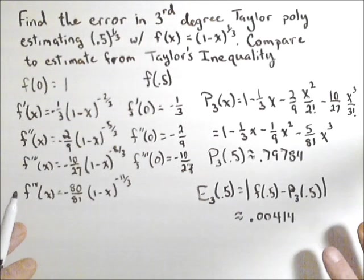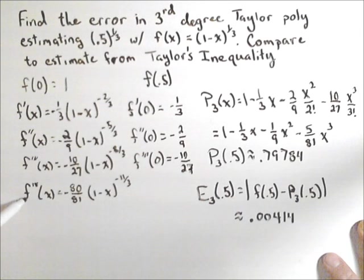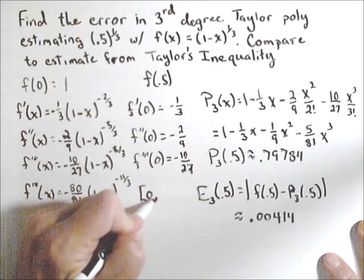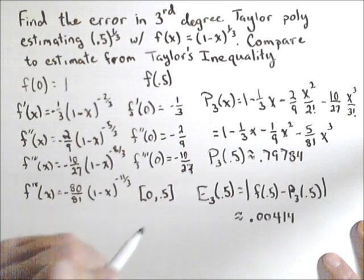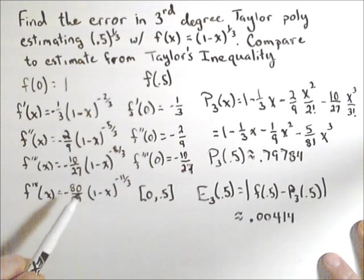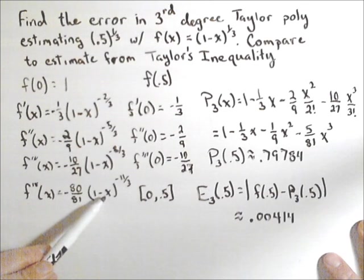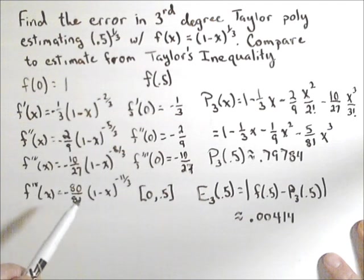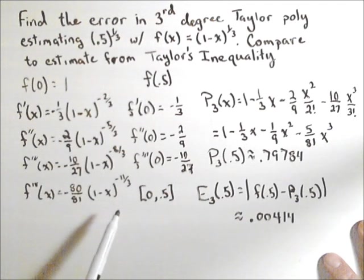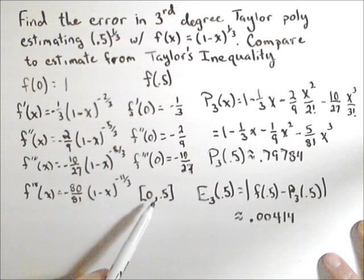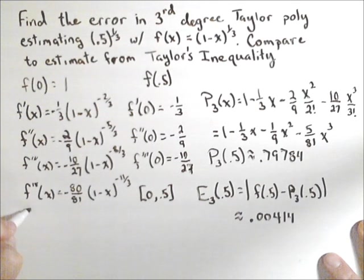Now let's see what we would have gotten from our Taylor inequality. So first thing we have to do is maximize the fourth derivative. First we see we're on the interval from 0 to 0.5, because 0 is where we're centered, 0.5 is where we're evaluating. Now between 0 and 0.5, we can see if we take the fifth derivative, the only critical point is going to be at 1, which is outside our interval, and our function is not defined at 1 anyways. But in general, you do need to check that. You would need to check the next derivative down to see if there's any critical points in your interval. We happen to not have any, so we don't have to worry about it.